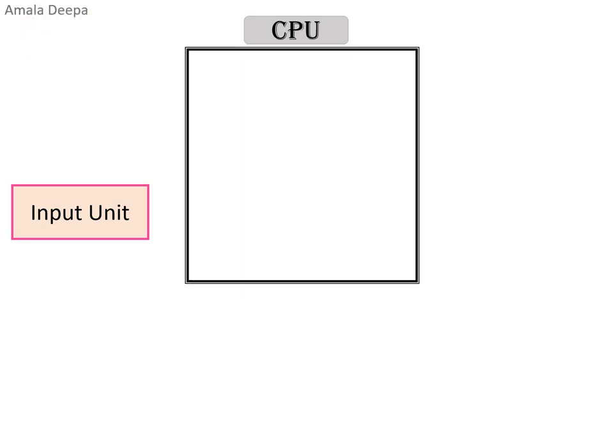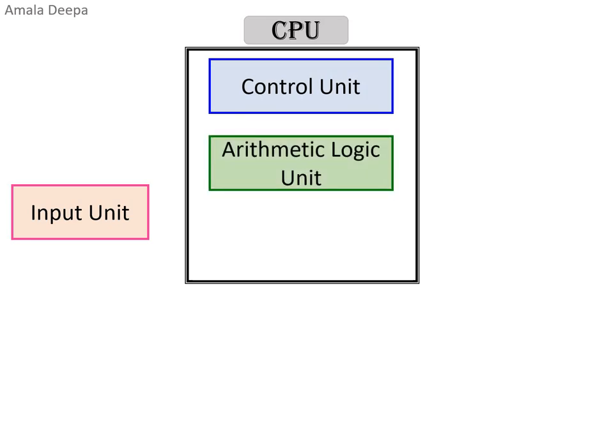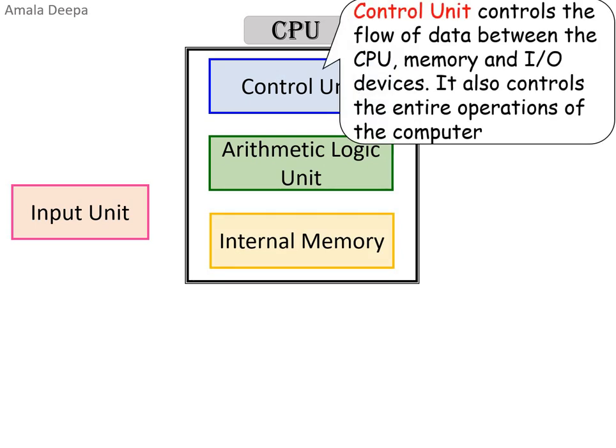The CPU has three major components: control unit, arithmetic logic unit, and internal memory. The control unit controls the flow of data between the CPU, memory, and input/output devices. It also controls the entire operations of the computer.